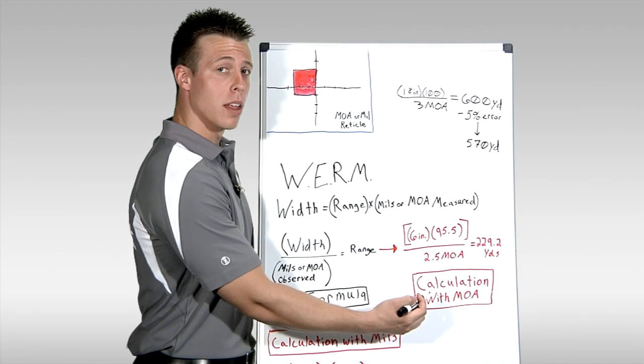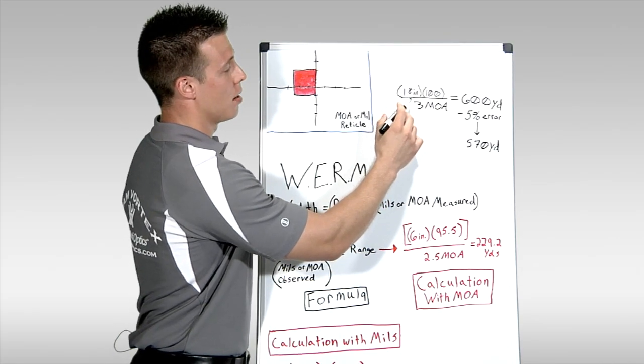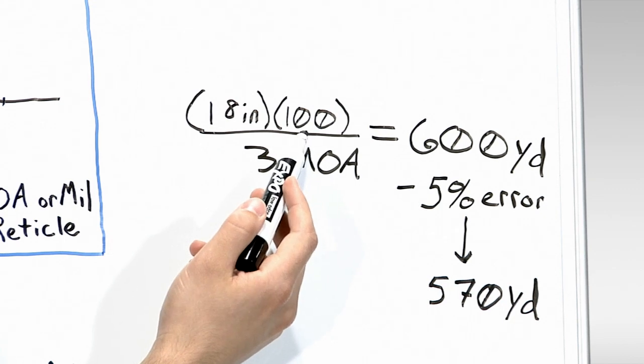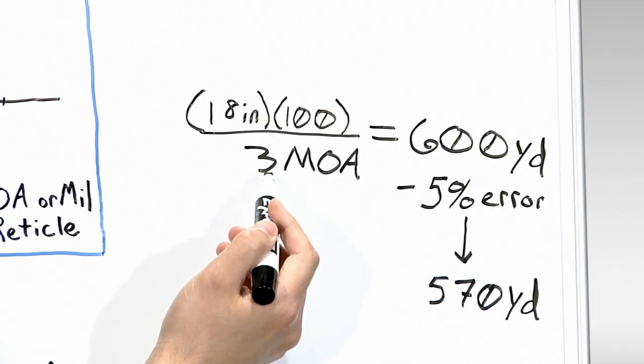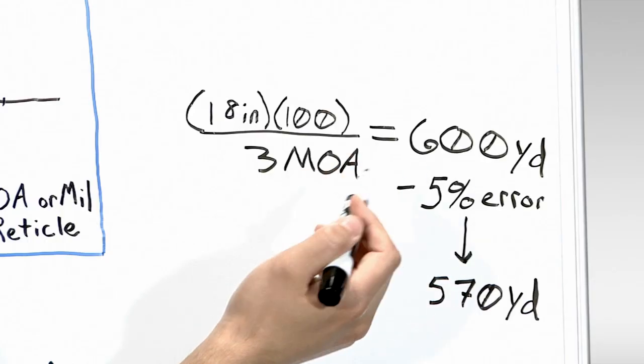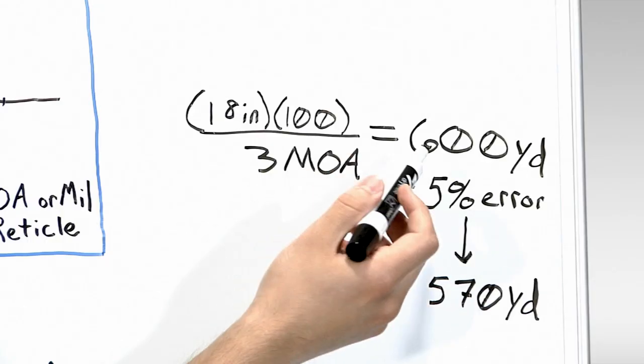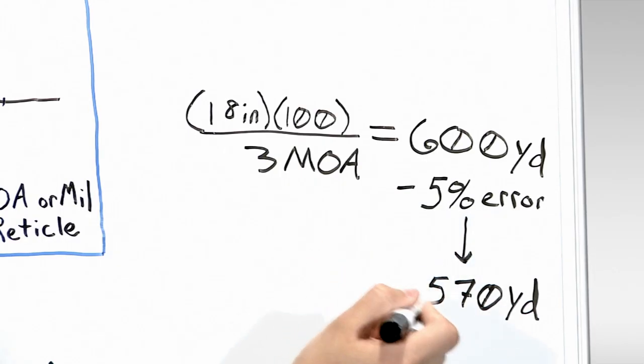So let me show you what I mean by that. Let's take a different example. In this case, we're measuring a target that is 18 inches wide. And we use 100 instead of 95.5 to save time for the sake of simplicity. We'll divide this by 3 MOA, because in this case, we'll say our target fills out that much. And then we'll get a value of 600. And if we left it at that, we would assume that our target is 600 yards away. But if we don't account for this 5% error, we wouldn't see that our target is actually 570 yards away. This is a significant difference to you as a shooter. If you're compensating for 600 instead of 570, it could cause you to shoot high.